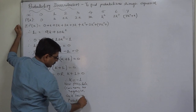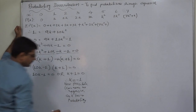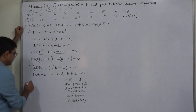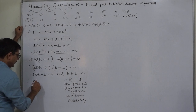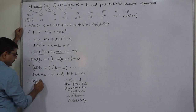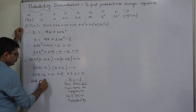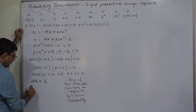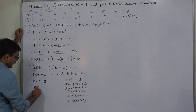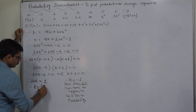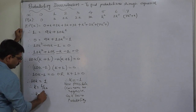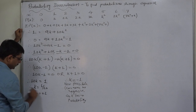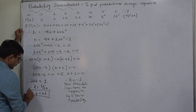So the only option is 10K equals 1. Therefore, K equals 1 by 10, which means K equals 0.1.